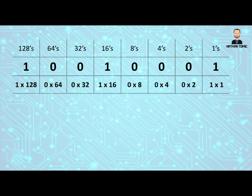So what I have is I've got 1 one, 0 twos, 0 fours, 0 eights. I've got 1 sixteen, 0 thirty-twos, 0 sixty-fours and 1 one hundred twenty-eight.